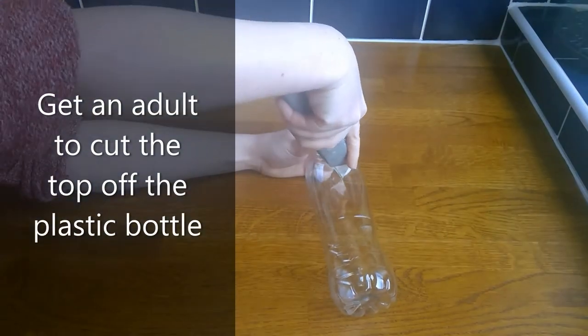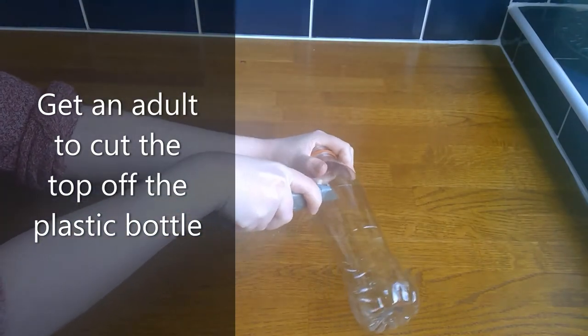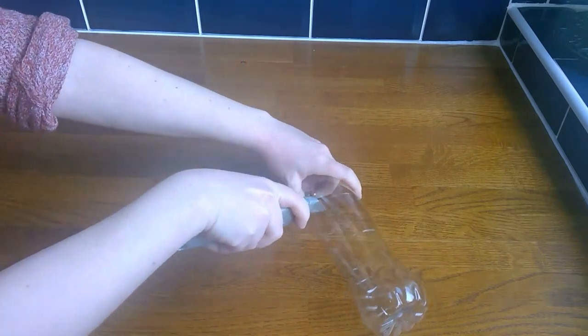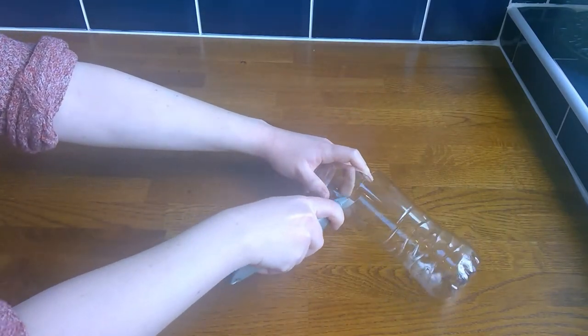The first thing you need to do is get an adult to cut the top off the plastic bottle. This requires some sharp scissors or a craft knife, so you'll want to get some help with this rather than doing it yourself.